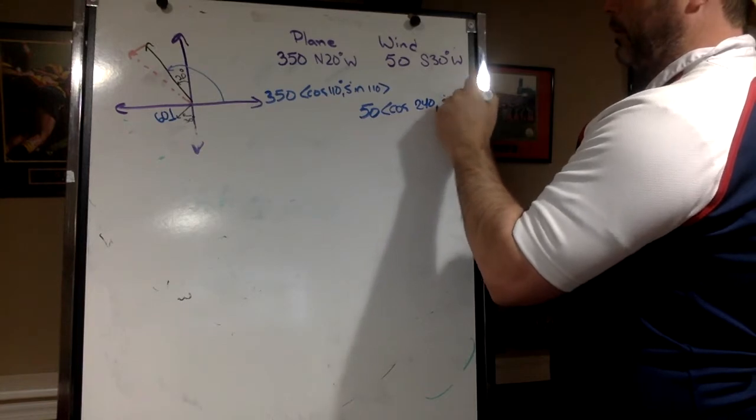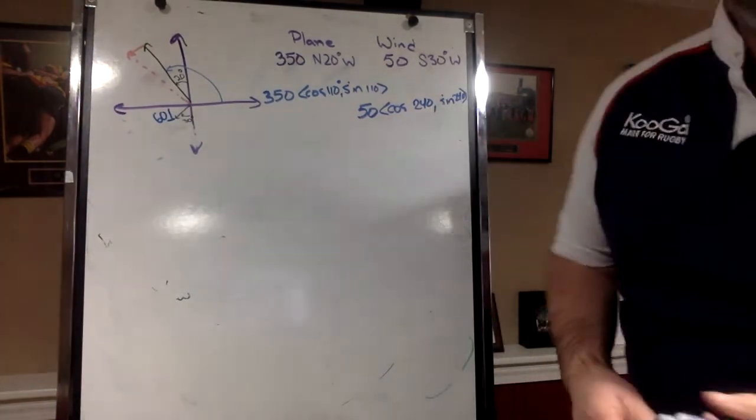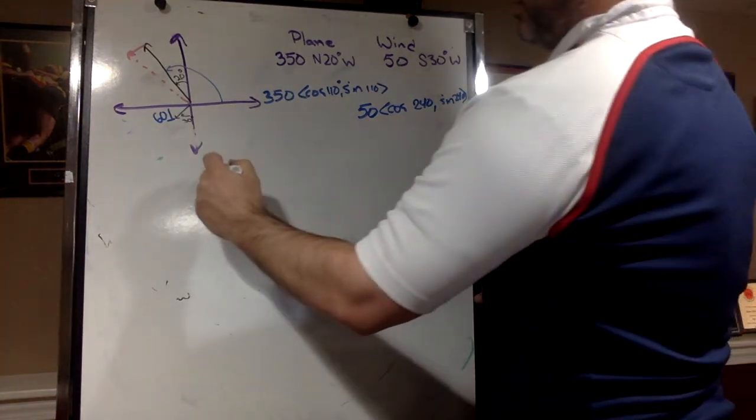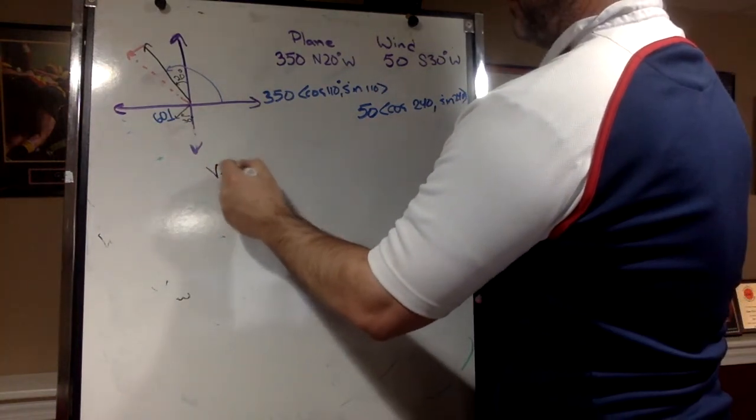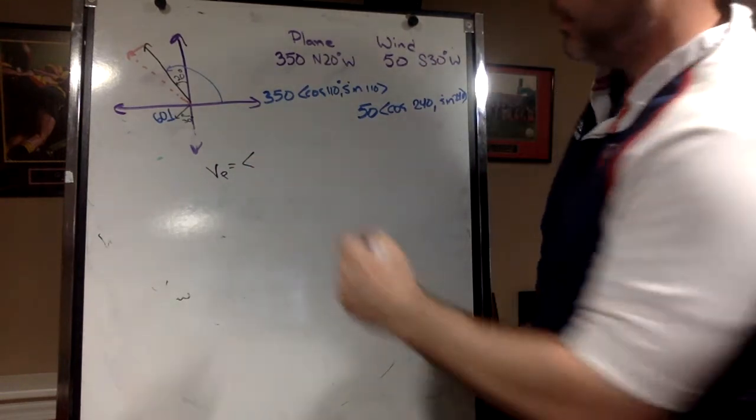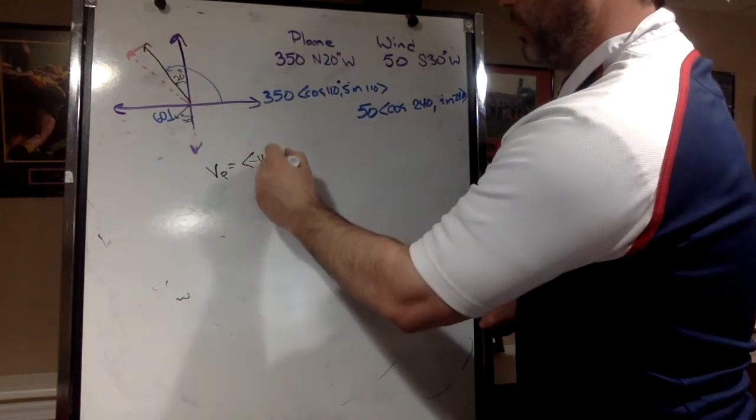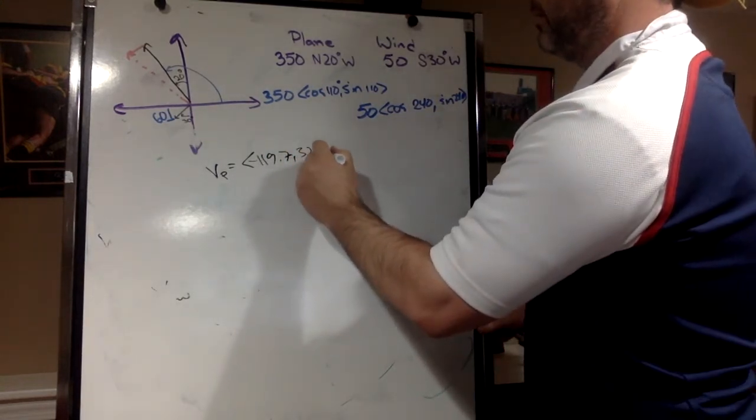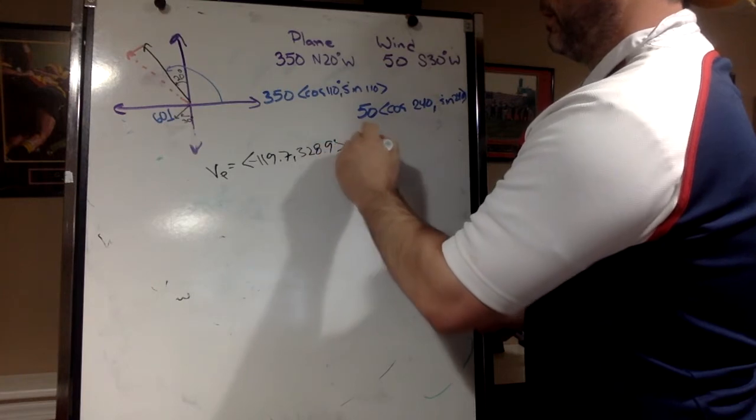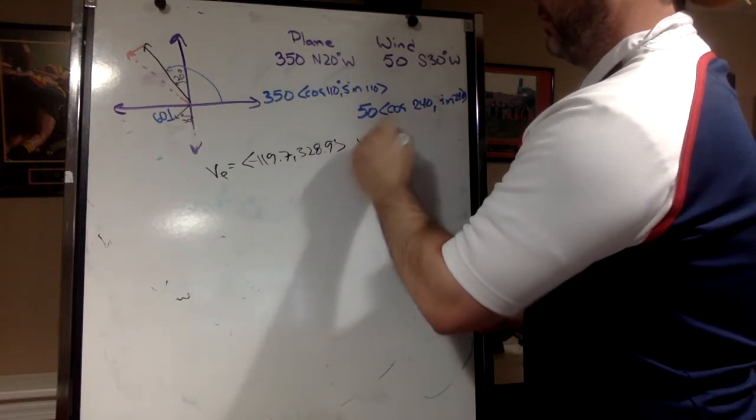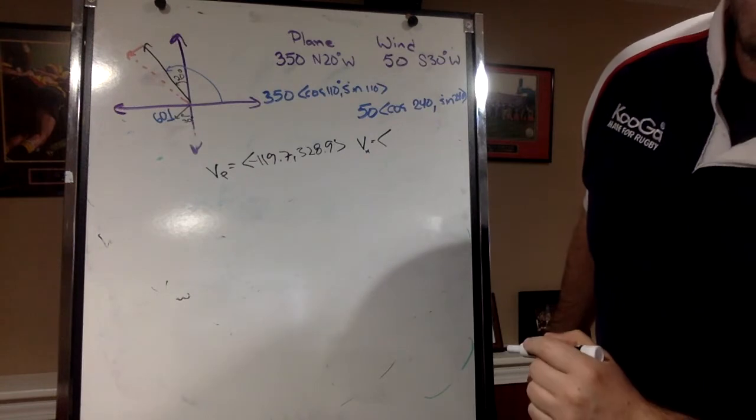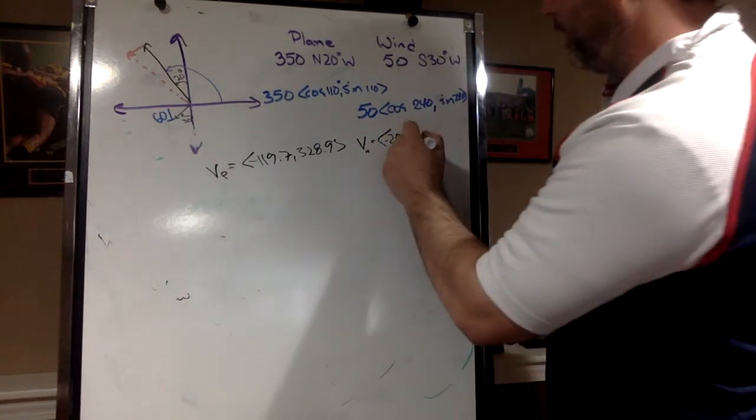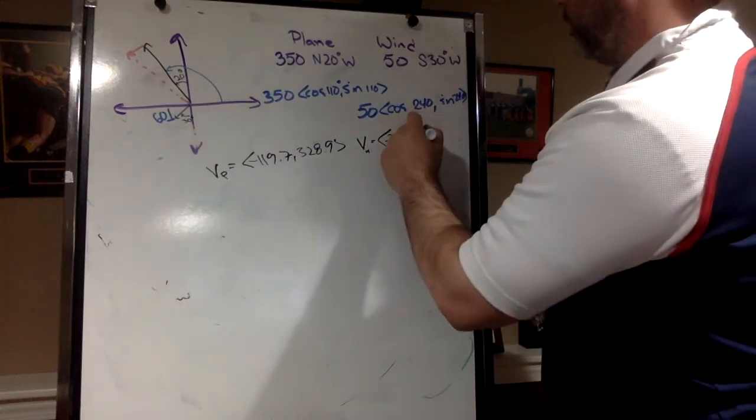I always run out of room, don't I? All right, so we can do those out as decimals. So let's do vector of the plane, and that gives us negative 119.7, 328.9. And our vector for our wind - let's see if we fit - negative 25, oh negative 25 even, and negative 43.3.